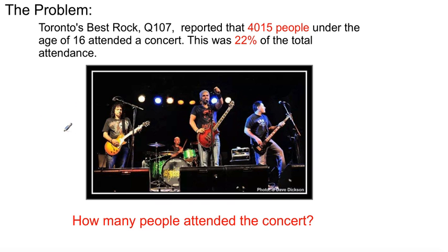The problem is a radio station reported that 4,015 people under the age of 16 attended a concert. This was 22% of the total attendance. The question they're asking you is how many people attended the concert. So here's the numbers that are given: 4,015 and that's 22% of the total. We want to know what is the entire attendance at the concert.